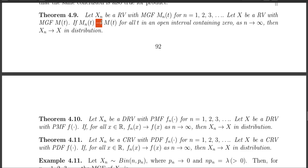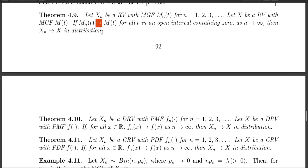This convergence is basically a pointwise convergence, and that convergence has to be true for all points in a neighborhood around the point 0. In a neighborhood around the point 0, then Xn converges to X in distribution.